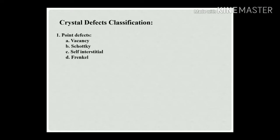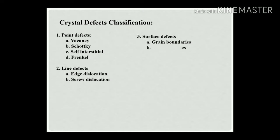Based on type, point defects or zero-dimensional defects include: vacancy, Schottky, self-interstitial, and Frenkel defects. Line defects, also called dislocations, include edge dislocations and screw dislocations. Surface defects include grain boundary, tilt boundary, twin boundary, and stacking fault defects.